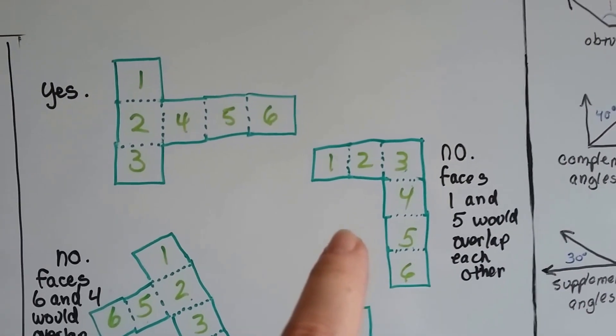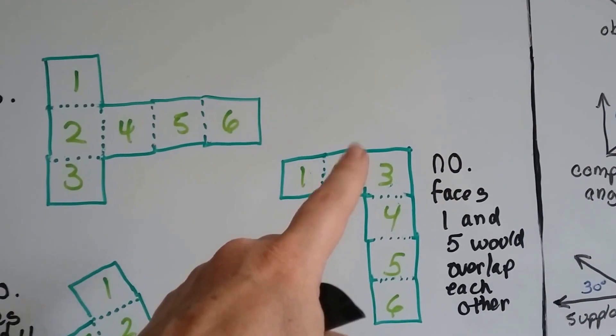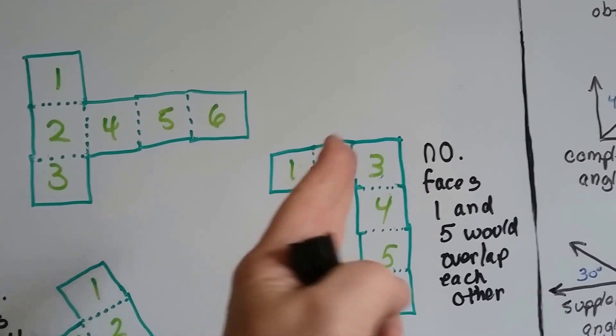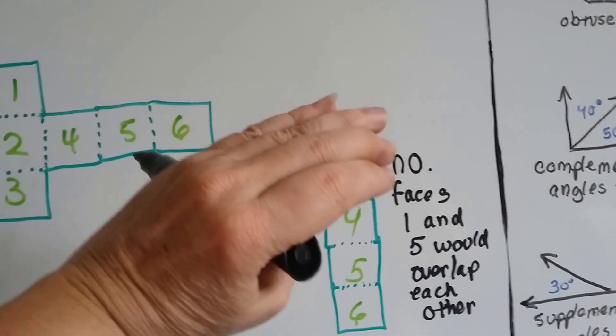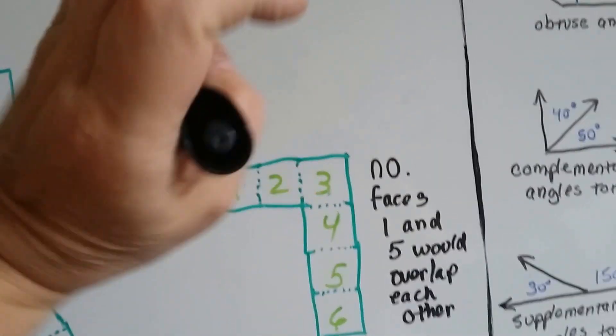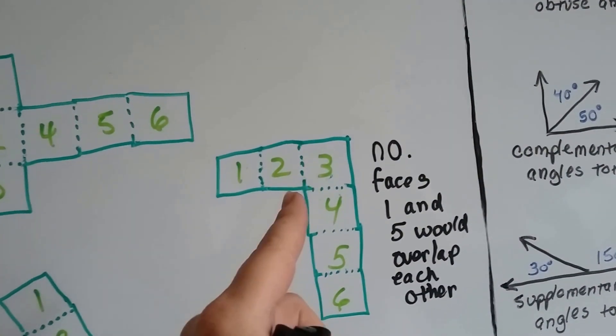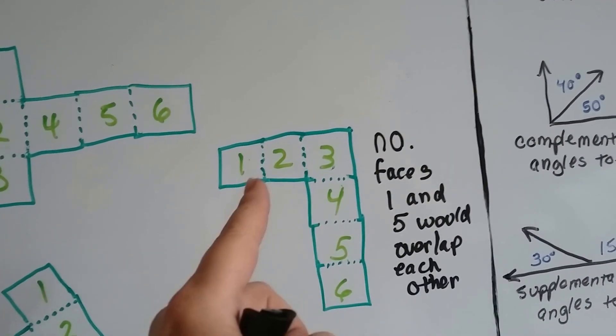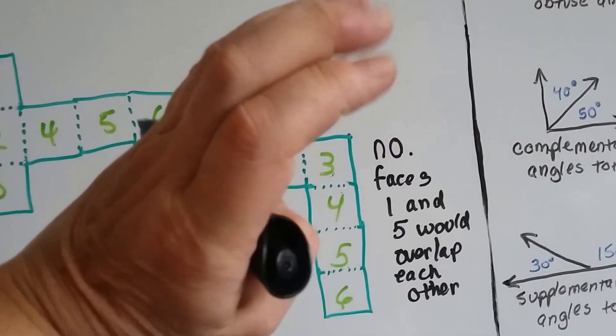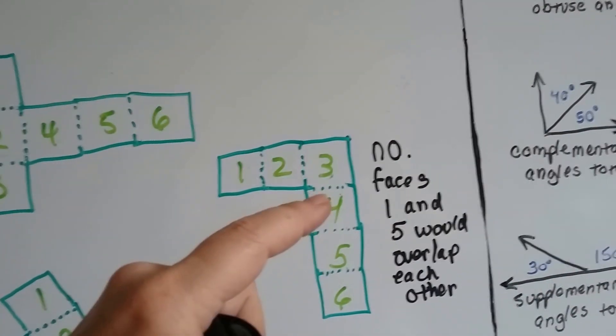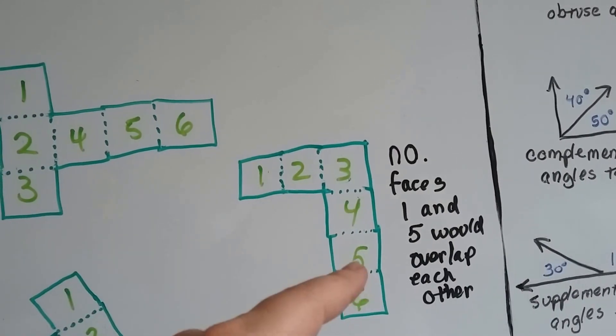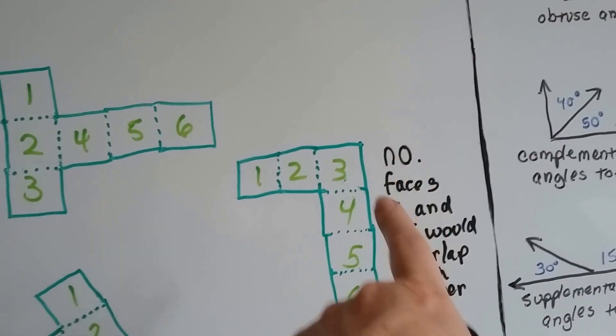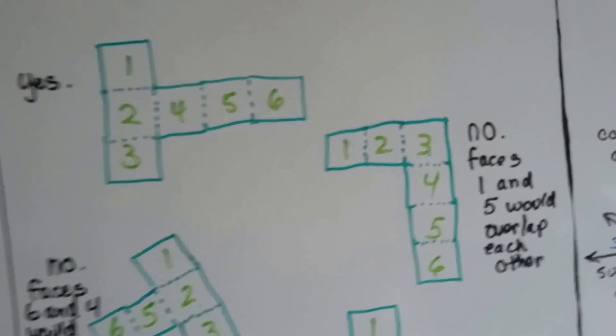This one would not work. If we folded it here and here, number two would end up being a side piece like that. And number one would end up being on the top. It would create an L shape. This would be the side. And then this would end up folding up and being on the top like that. Then these would fold on top of each other. One and five would end up being on top of each other. And this whole side would be open over here. So no, that wouldn't work.